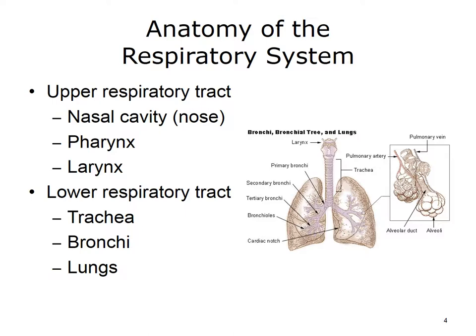The trachea branches into two tubes called the bronchi. Each bronchus enters a lung and further divides into progressively smaller branches called bronchioles. The bronchioles end in tiny sacs called alveoli. Alveoli means airspace. Finally, the lungs are pyramid-shaped spongy air-filled organs molded into the thoracic cavity. The right lung has three lobes, while the left has two. Pleura are the membrane coverings that enclose each lung. The visceral pleura covers the lung.